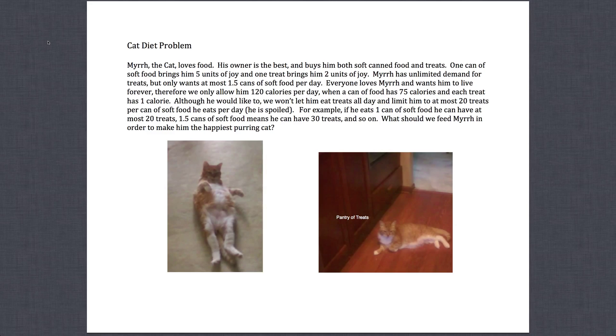You can have at most 20 treats per can of soft food he eats. In this example I say if he had one can of soft food he could have 20 treats, 1.5 would be 30 treats and so on. We want to know how much we should feed Murr in order to make him the happiest cat.